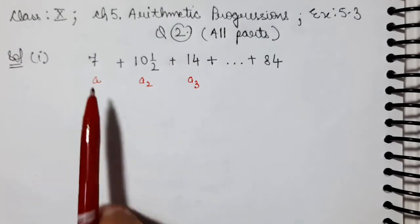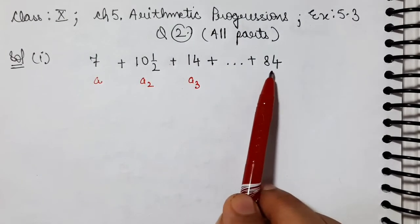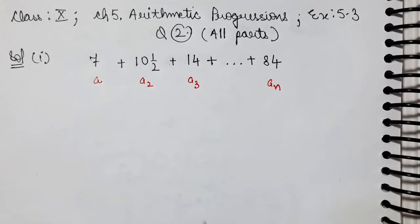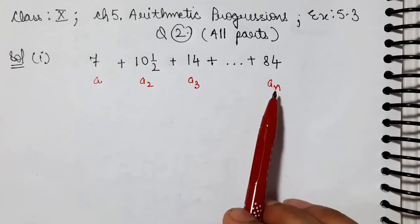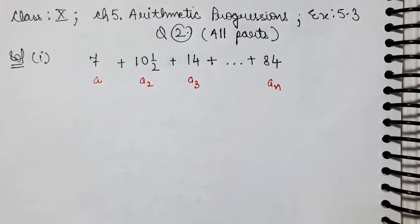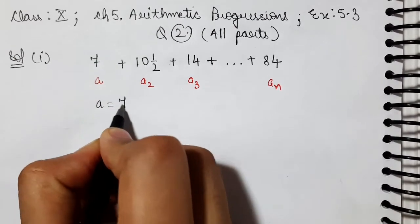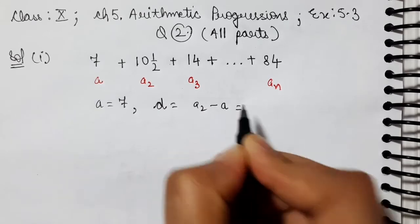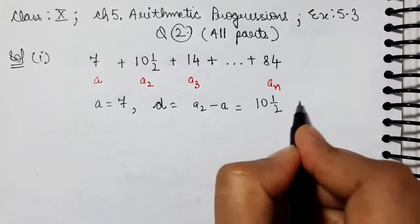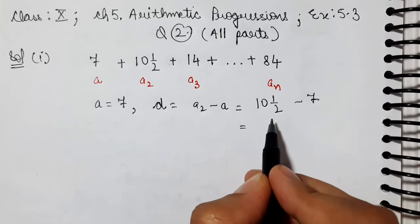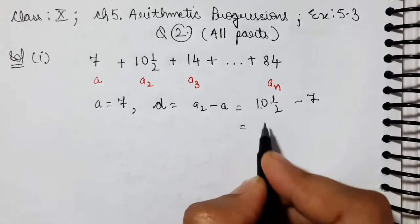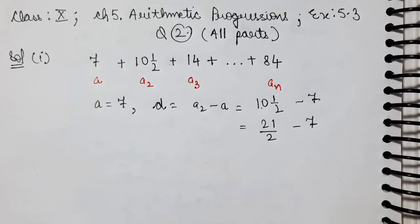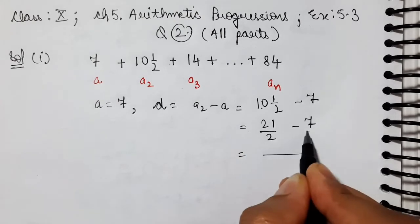So we have to find it. Here we have the first term, second term, third term and last term given, but the number of terms is not given. We have a formula from section 5.2 for the nth term. We can apply that to find the value of n. Let me explain question part 1. See here, this is our first term, second term, third term, and we don't know which number this term is.